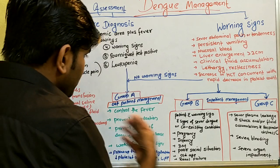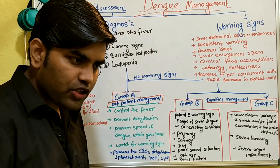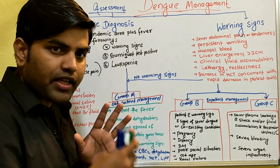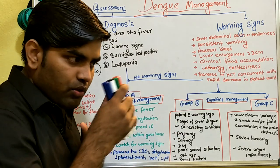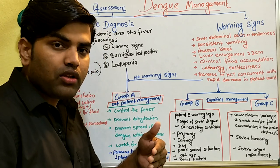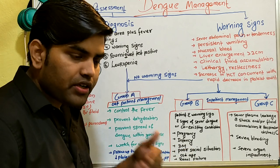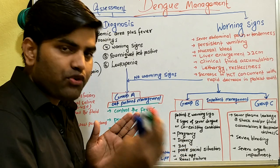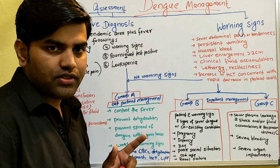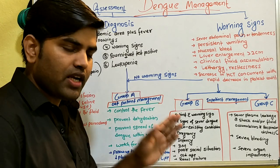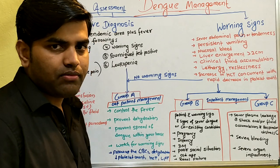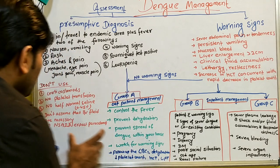Educate the patient about the three phases of dengue: the febrile phase, the critical phase, and the recovery phase. After the febrile phase ends, the patient may feel better, but the critical stage arises from 24 to 48 hours after fever subsides. Follow up closely during this critical stage — if this phase passes without complications, the patient will recover fully.